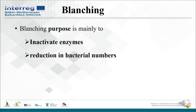Bleaching is another physical hurdle based on heat processing. During bleaching, the food product is exposed to a range of temperatures from 70 to 100 degrees Celsius. This process is mainly used for fruits and vegetables before further processing, like drying or freezing. The main purpose of bleaching is to inactivate enzymes which could result in quality problems during subsequent storage, with an expected substantial reduction of microorganism numbers.